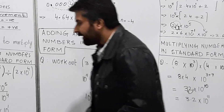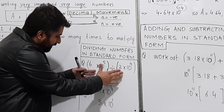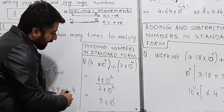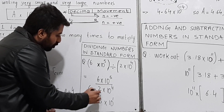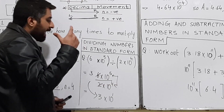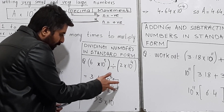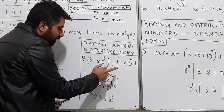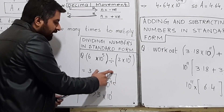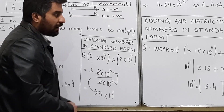The last case is dividing numbers in standard form. Express them in division form and simplify the numbers: 6 ÷ 2 = 3. For the powers of 10, using the rules of indices, move the denominator's power (10⁴) to the numerator and change its sign to negative. So you get 10 raised to the power 5 + (−4) = 10¹. The final answer is 3 × 10 raised to the power 1.